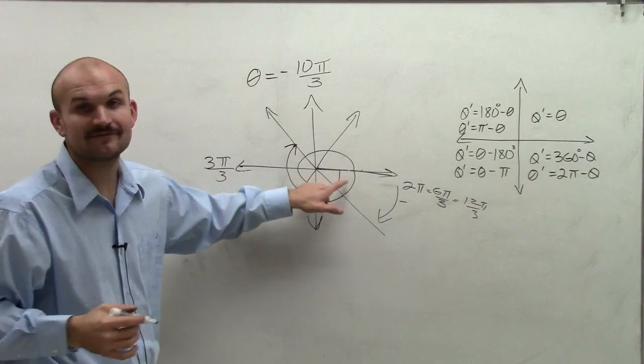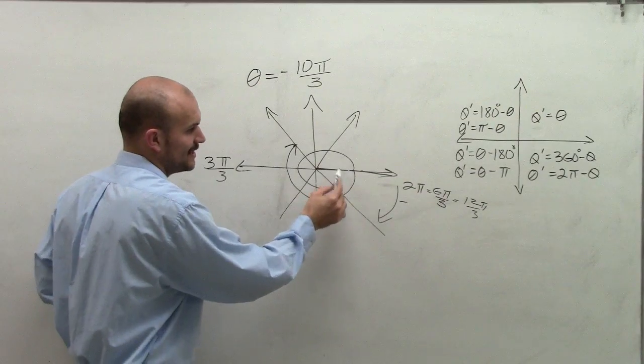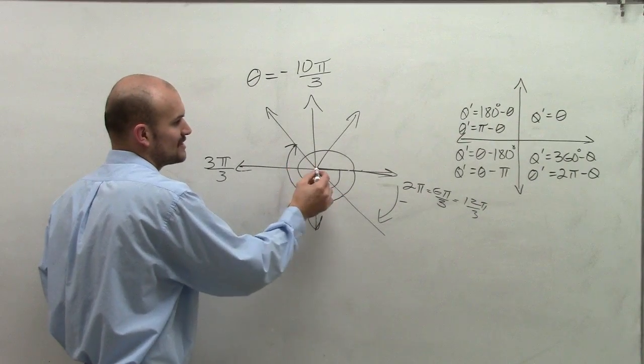So that's where the angle negative 10 pi over 3, with my initial side here going all the way around to my terminal side here.